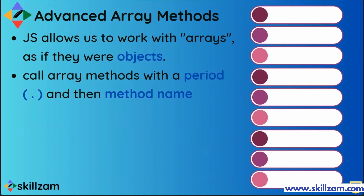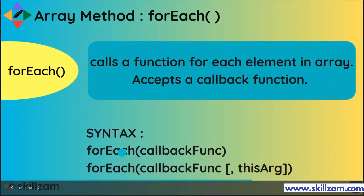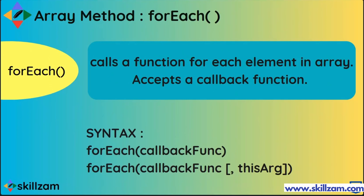We have already seen a lot of basic array methods, but now we are going to see much more complex and important array methods. One of them is forEach. The forEach array method calls a function for each element in an array and accepts a callback function. Let's see how the callback function is passed as an argument and how this forEach array method works.